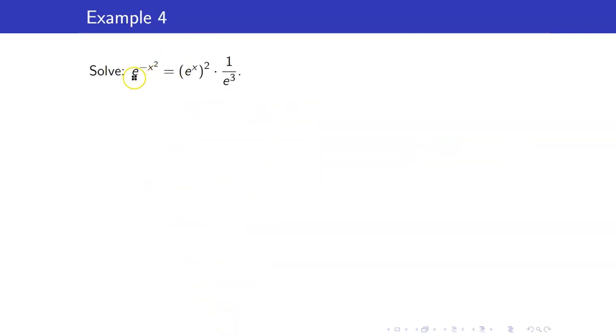For our last example, we have the number e appearing here. Don't be scared of e, e is just an irrational number, approximately equal to 2.72. I'll just copy e to the negative x squared. What is e to the x raised to 2? We simply multiply the exponents. So, this is e to the 2x.